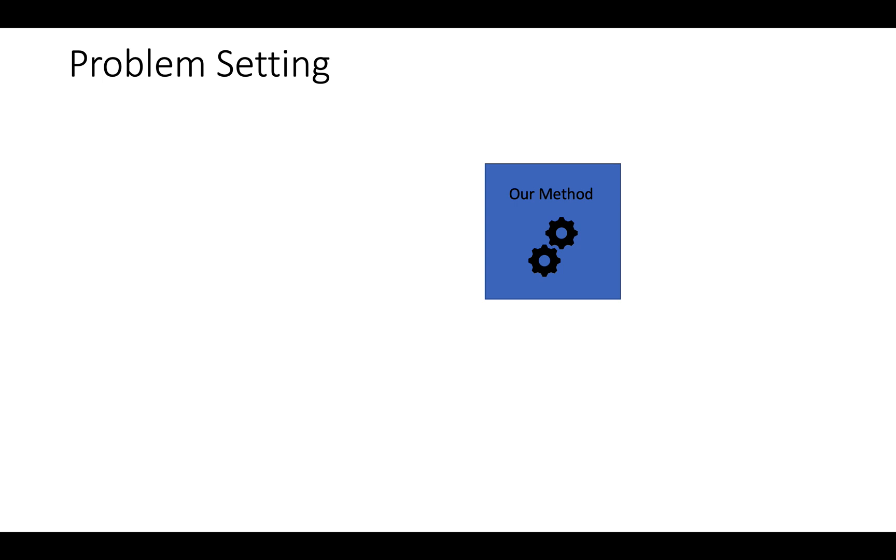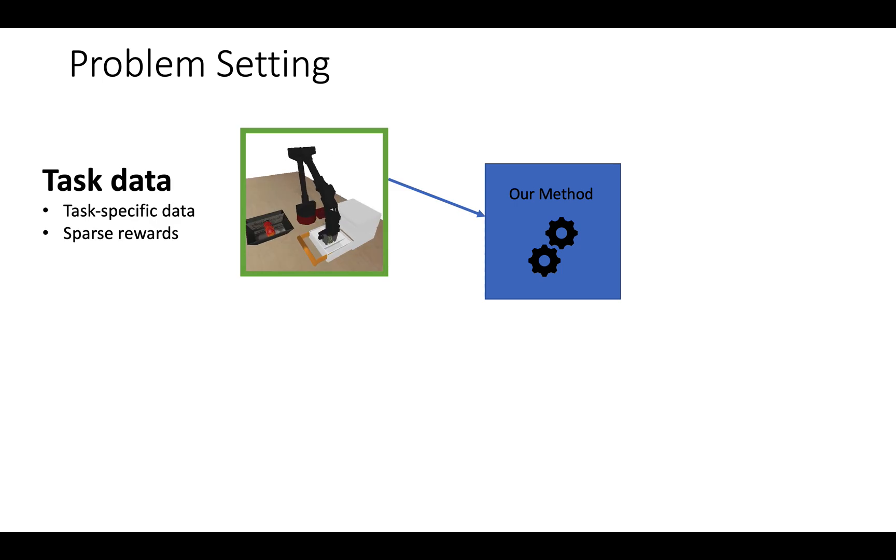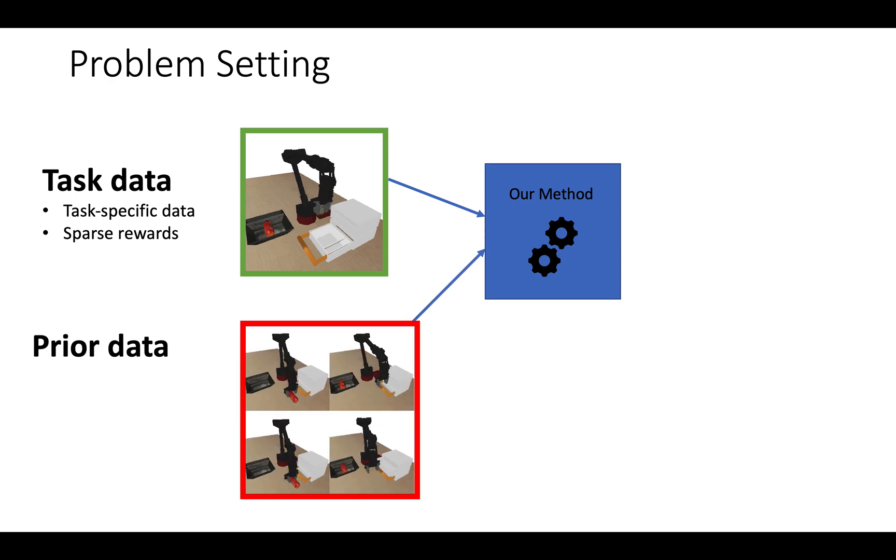We can now formalize our problem setting. The input to our method consists of two distinct types of datasets. The first dataset is a task-specific dataset and is labeled with sparse rewards, similar to standard reinforcement learning. The second dataset consists of unlabeled interaction data with no associated reward labels whatsoever.